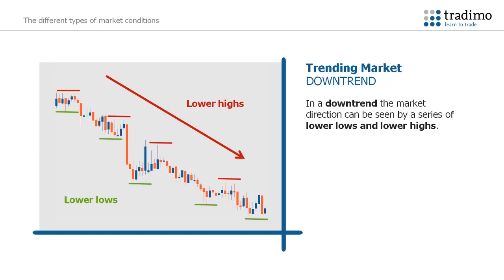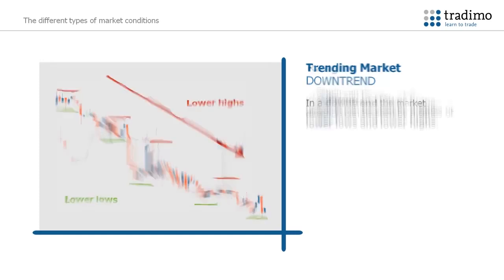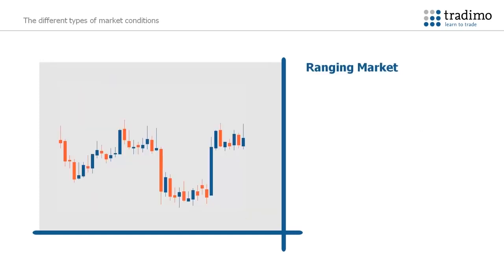This means that when the price is moving in a trend, not all the candles move in the same direction. It is the higher highs and higher lows in an uptrend, and the lower lows and lower highs that will determine the trend. So in an uptrend, not every candle is bullish, and in a downtrend, not every candle is bearish. The other type of market condition is a ranging market.